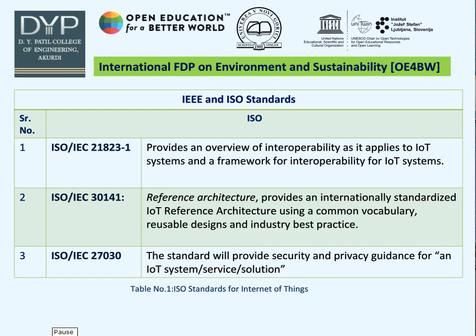Now let's have a quick look at the various IEEE and ISO standards — this is not an exhaustive list, only the prominent ones. ISO/IEC 21823 provides an overview and framework for interoperability for IoT systems. ISO/IEC 30141 provides a reference architecture, offering a common vocabulary, reusable designs, and industry best practices for building IoT systems or services. ISO/IEC 27030 relates to privacy, security, and trustworthiness when building or working with an IoT system, service, or solution.